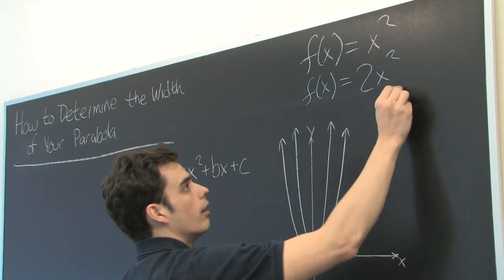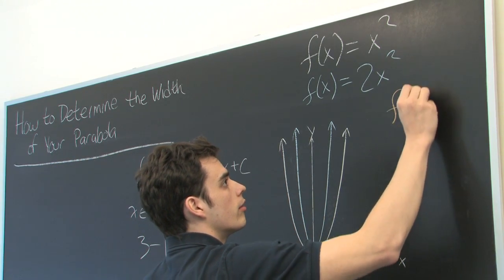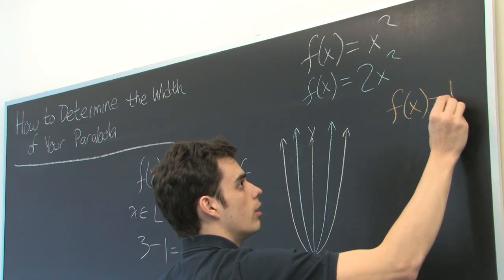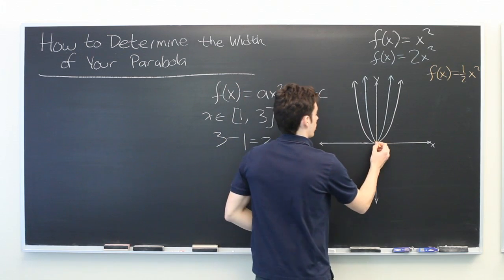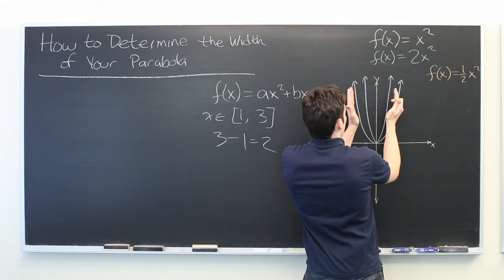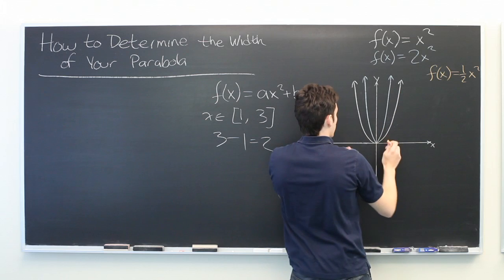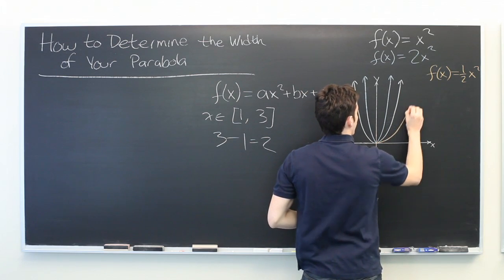Contrast this with f(x) = (1/2)x². Again, there is an inverse relationship. We take our standard parabola and stretch it outwards.